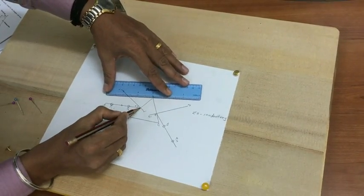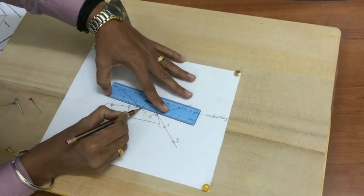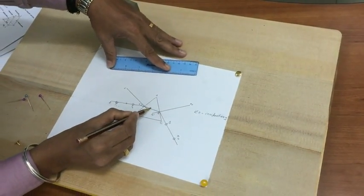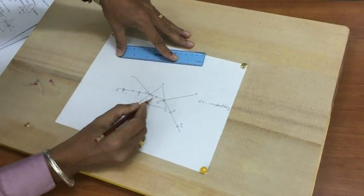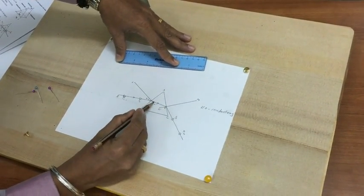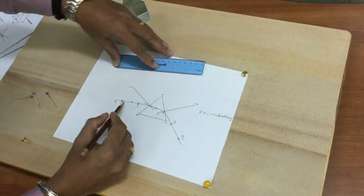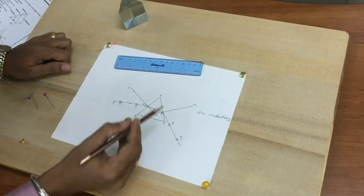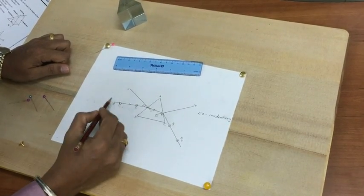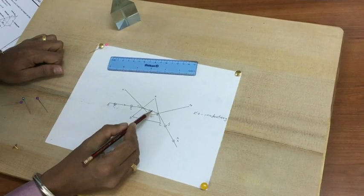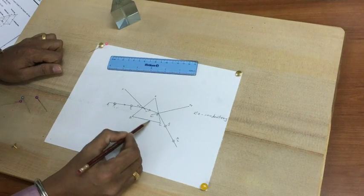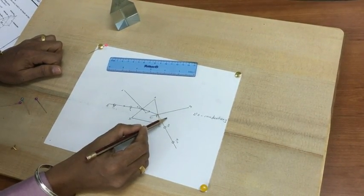Join points O and Q. Ray OQ will show the path of the refracted ray of light. So it's clearly visible that an incident ray EO, when it enters from air into a glass slab, it bends towards the base of the prism and once it emerges out, again it bends outwards.